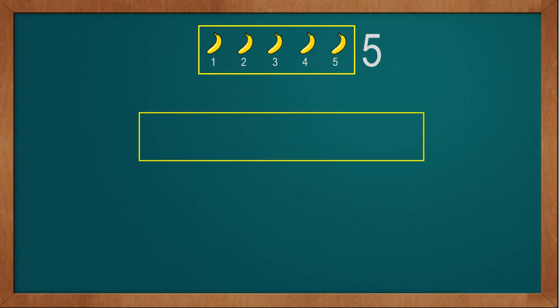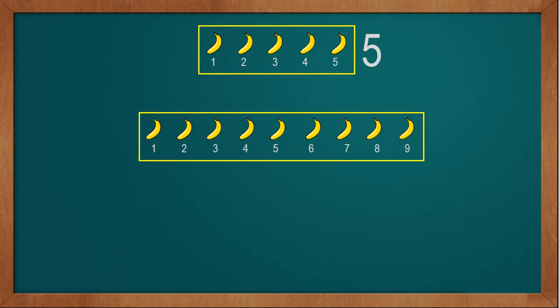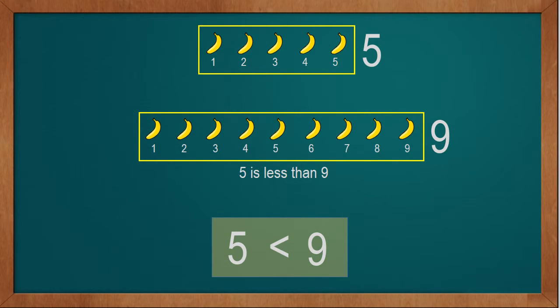Now we will take another number. Suppose we take 9 bananas: 1, 2, 3, 4, 5, 6, 7, 8, 9. We have a total of 9 bananas. Now we compare 5 bananas with 9 bananas. We see 5 is less than 9 — the quantity of 5 bananas is less than 9 bananas. So we can write 5 less-than sign and 9. 5 is less than 9.